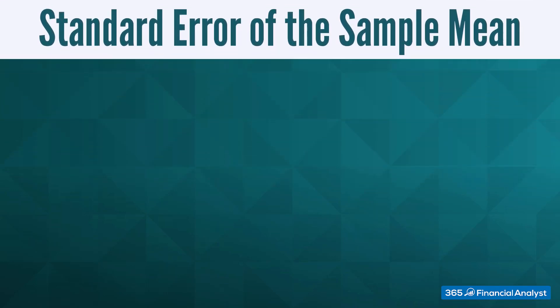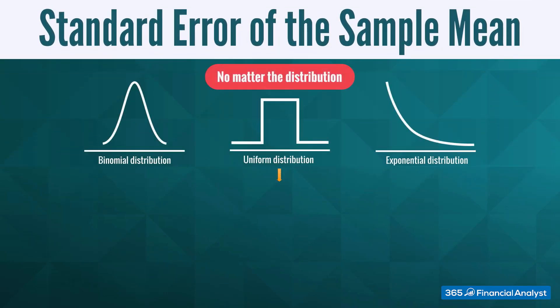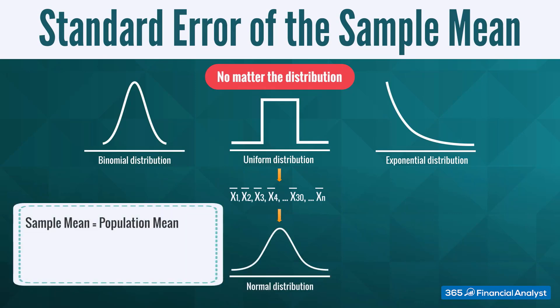We showed that no matter the underlying distribution of a dataset, the sample means would be normally distributed with a mean equal to the original mean, and a variance equal to the original variance divided by the sample size.